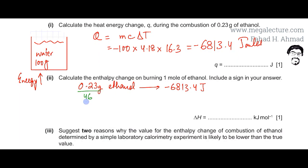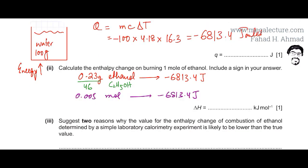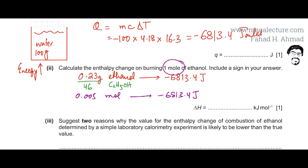The Mr of ethanol, C₂H₅OH, is 46: two carbons (24) plus one oxygen (16) plus six hydrogens (6) equals 46. So 0.23 divided by 46 gives 0.005 moles of ethanol, which produced −6813.4 joules of energy. We are asked to find the energy produced by 1 mole of ethanol.